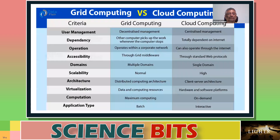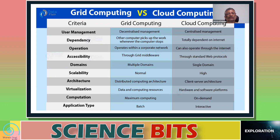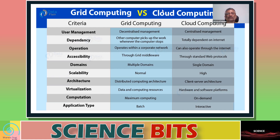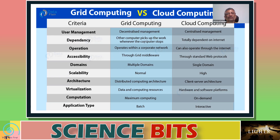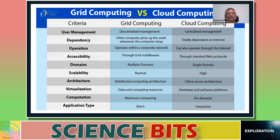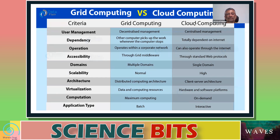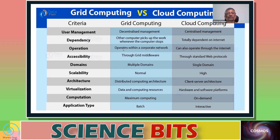Comparing grid computing and cloud computing: in grid computing you have decentralized management, whereas in cloud computing you have centralized management. In terms of dependency, other computers pick up the work whenever one computer stops. Cloud computing is totally dependent on the internet — if the internet is shut down, cloud computing cannot work.